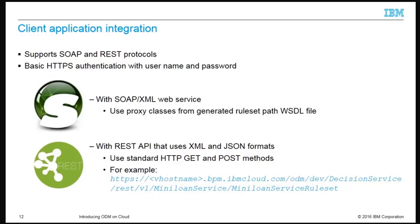IBM ODM on cloud supports integration with remote servers. It supports calls over HTTPS that use the SOAP and REST protocols with XML and JSON formats. Basic authentication over HTTPS is used to authenticate every API call. For any SOAP web service, you invoke a SOAP-based decision service from a client application through proxy classes, which can be generated from the web services description language file provided for the service. The client application can also call the decision service through the REST API using the standard HTTP GET and POST methods.